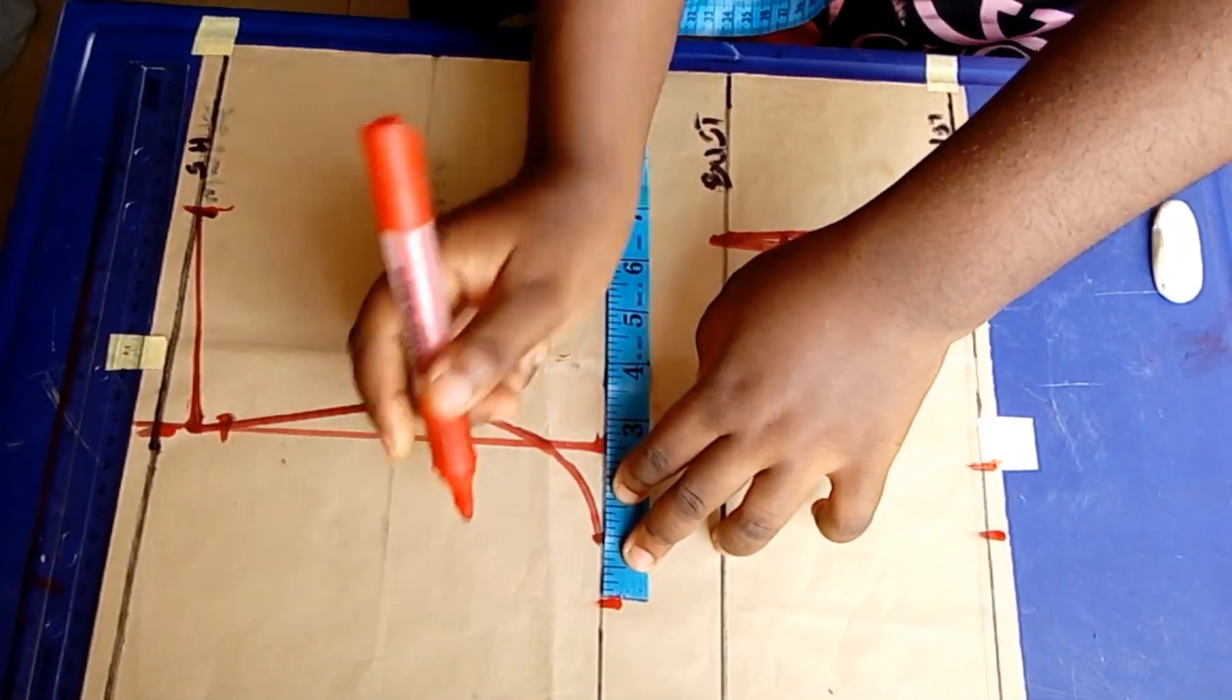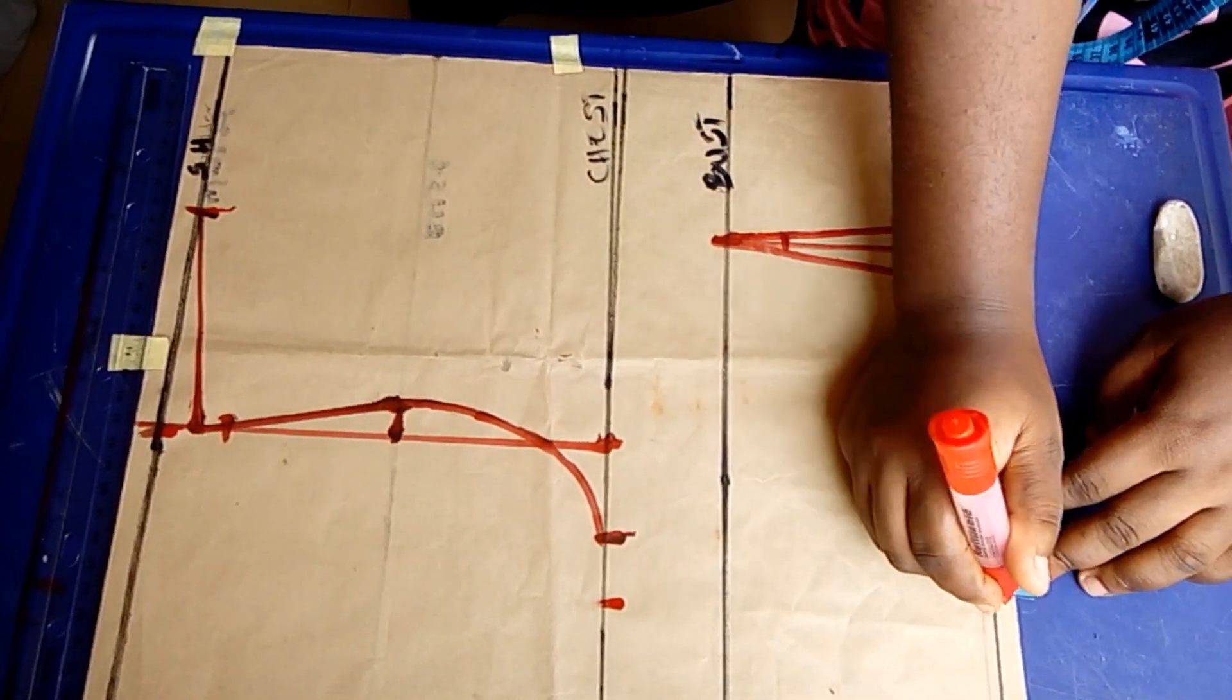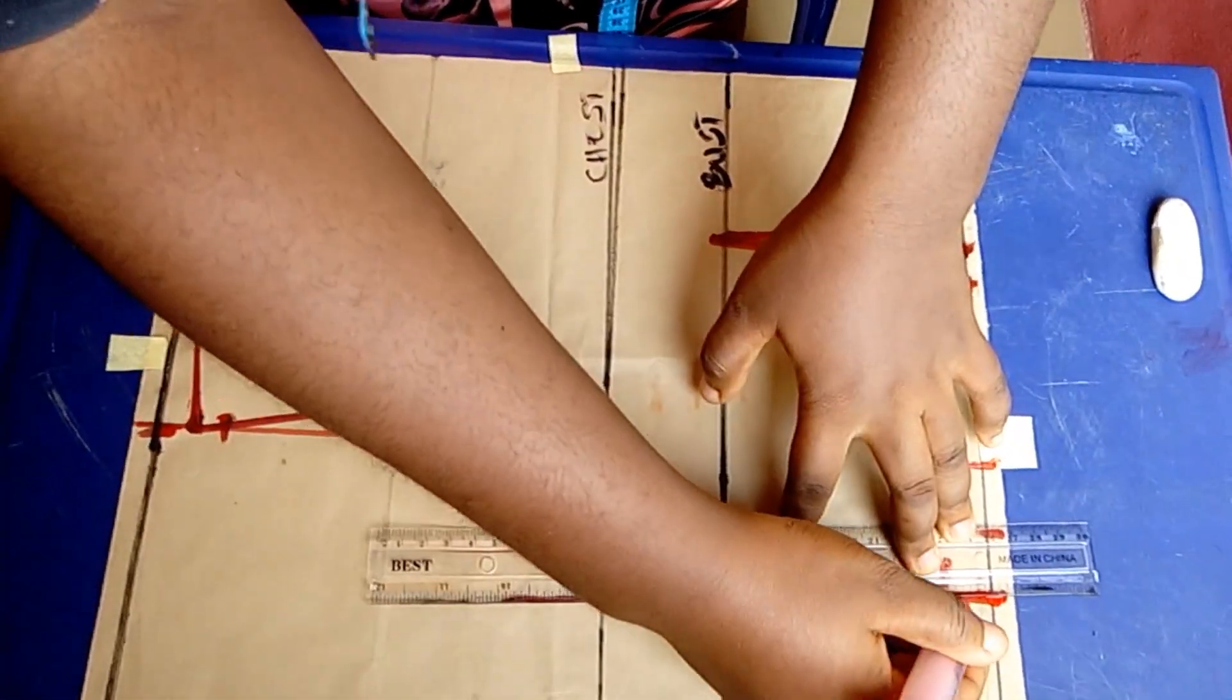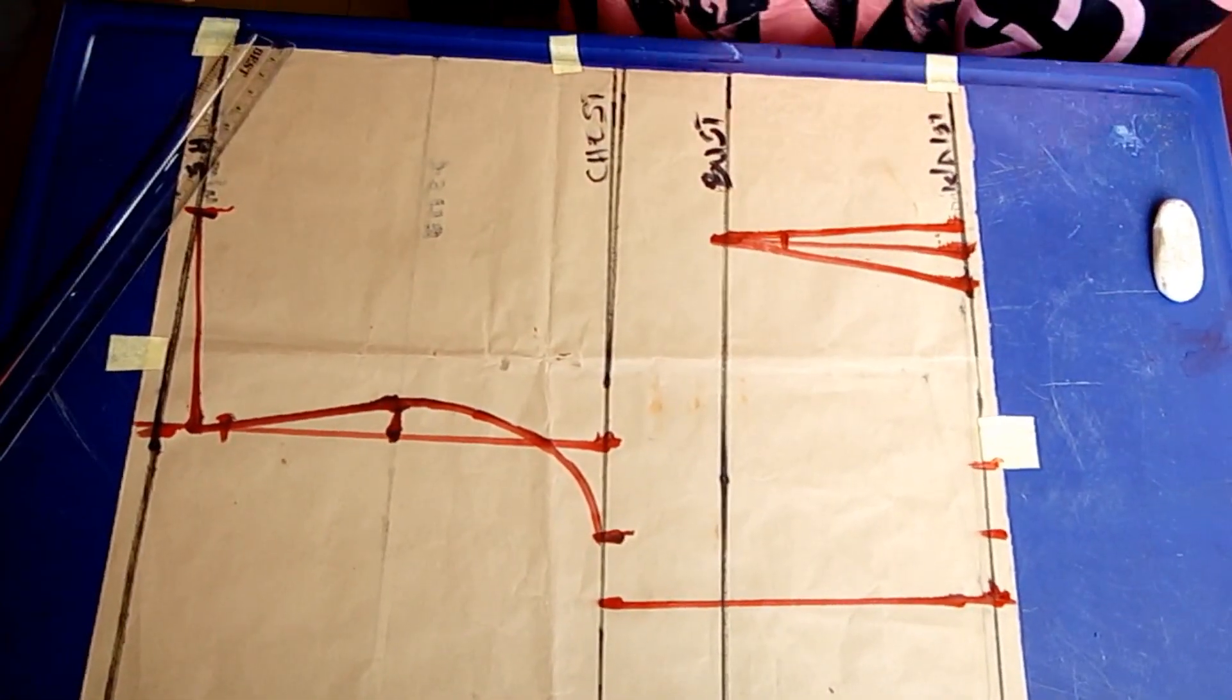Go ahead and add one inch for seam allowance across the pattern and then I'll connect it to form the front bodice.